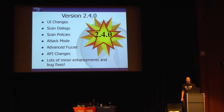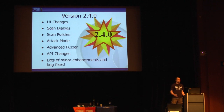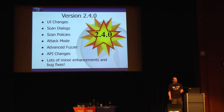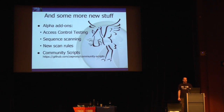That was a quick overview of version 2.4.0. One thing I haven't mentioned is the API changes. We have a REST API and there's much more you can do with it — you can now kick off multiple spiders and active scanners running concurrently, plus loads more features accessible via the API. If anything is missing, let us know and we'll put it in. There are also lots of minor enhancements and bug fixes — see the release notes for the full list.